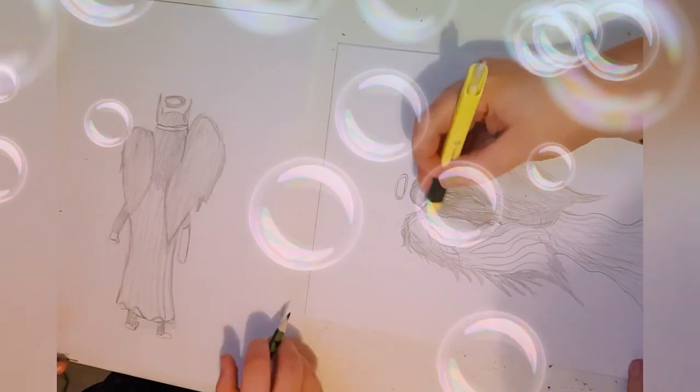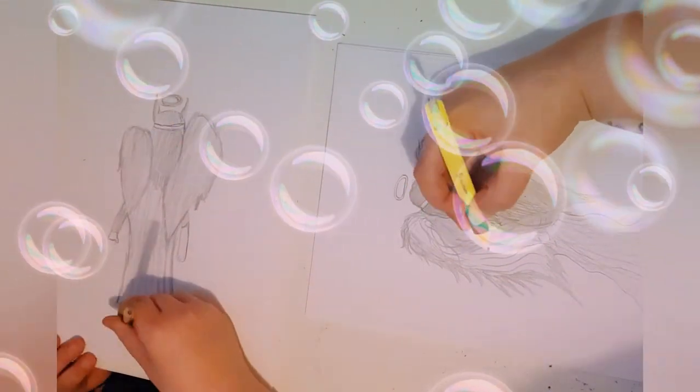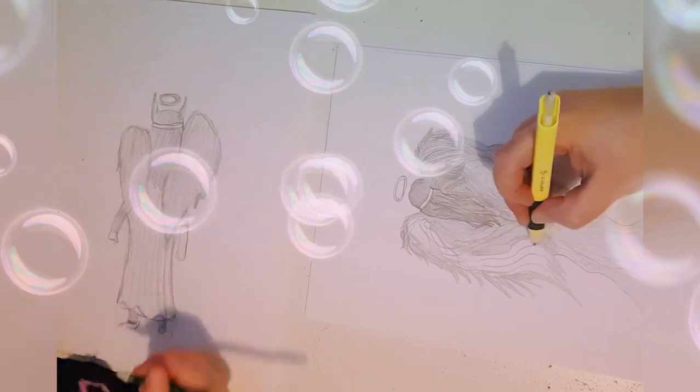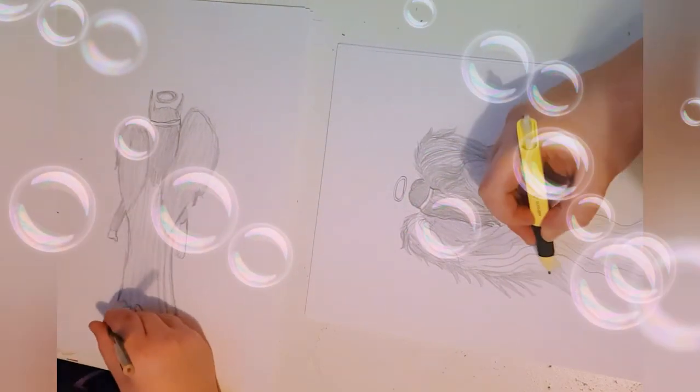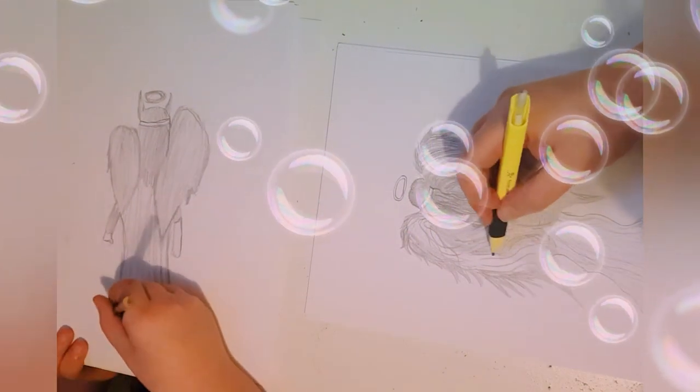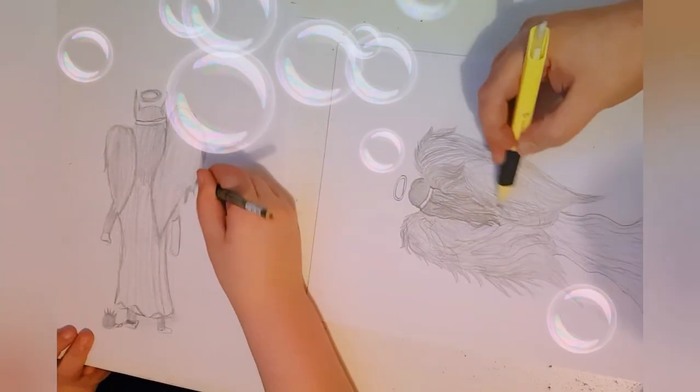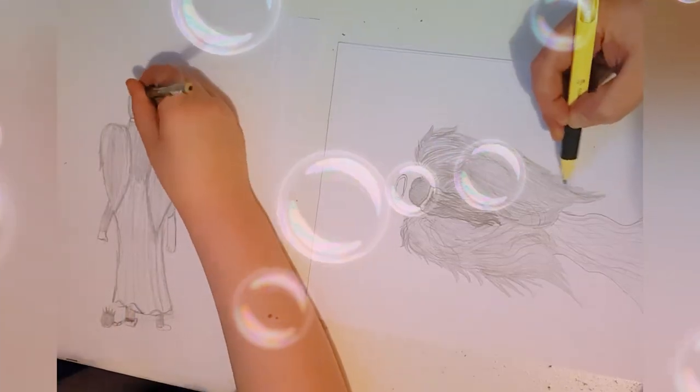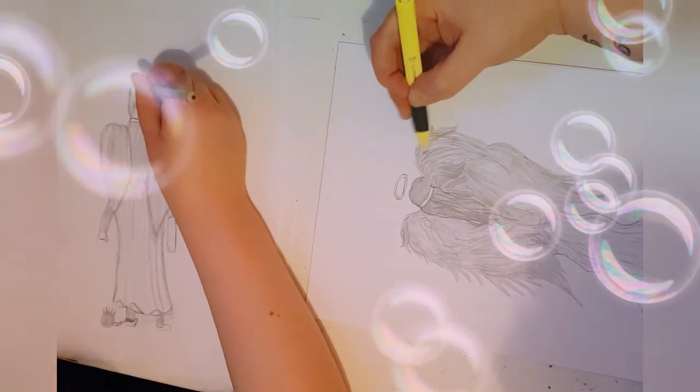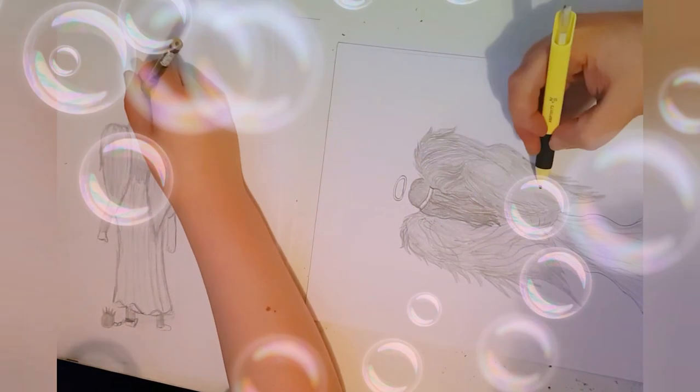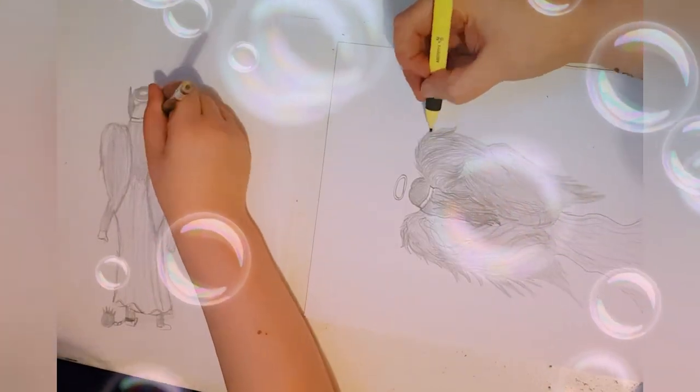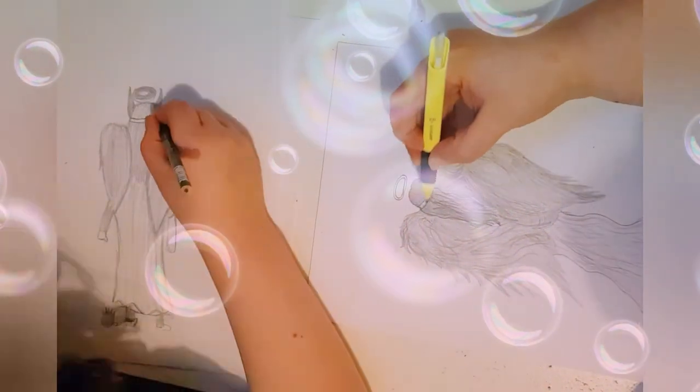I'm gonna draw her feet. I'm gonna draw her chain to one of her feet. It's gonna be on the demon side. I'm gonna fix her halo. I think that could be better.